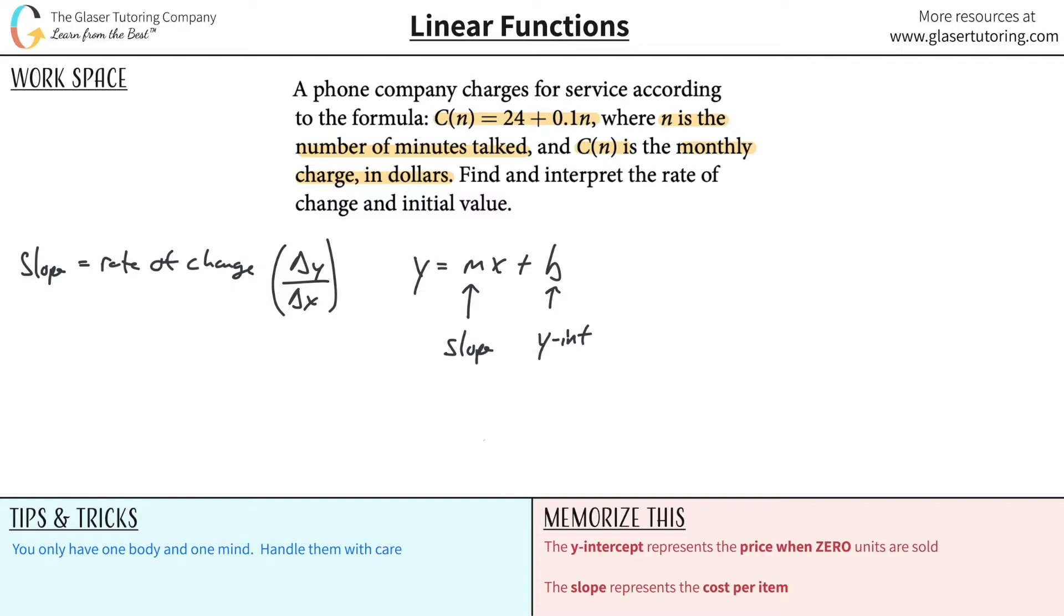So if C of n, I'm just going to call it C, the cost for the number of minutes talked, the monthly charge is going to be equal to 24 plus 0.1n.